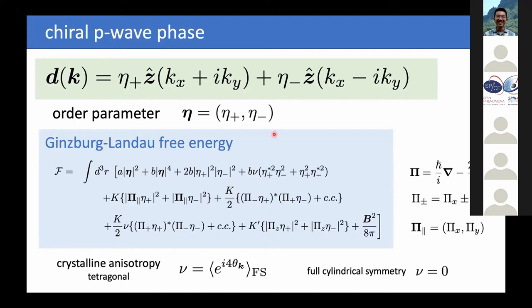You can undo a gauge transformation by a rotation or vice versa. Using this two-component order parameter to formulate the Ginzburg-Landau free energy, I can expand in a standard way. There is the second order term, fourth order terms, and gradient terms for in-plane dependence as well as gradients for C-axis dependence of the order parameter, where pi is the covariant derivative. There are also pi-plus and pi-minus terms with chiral structure.